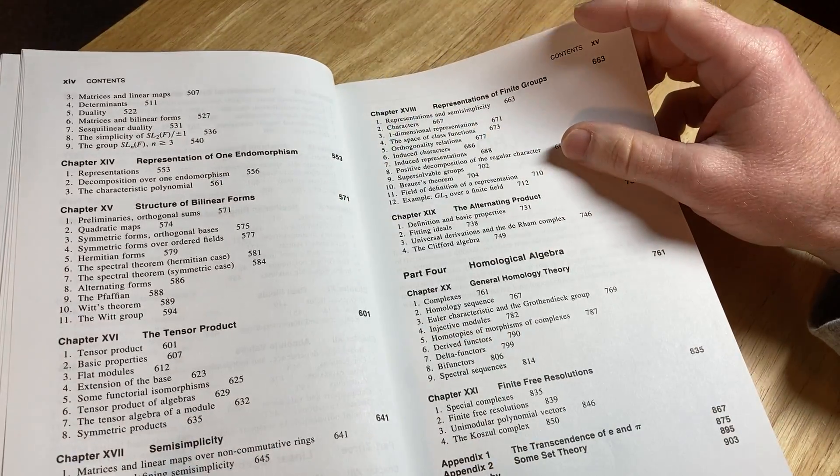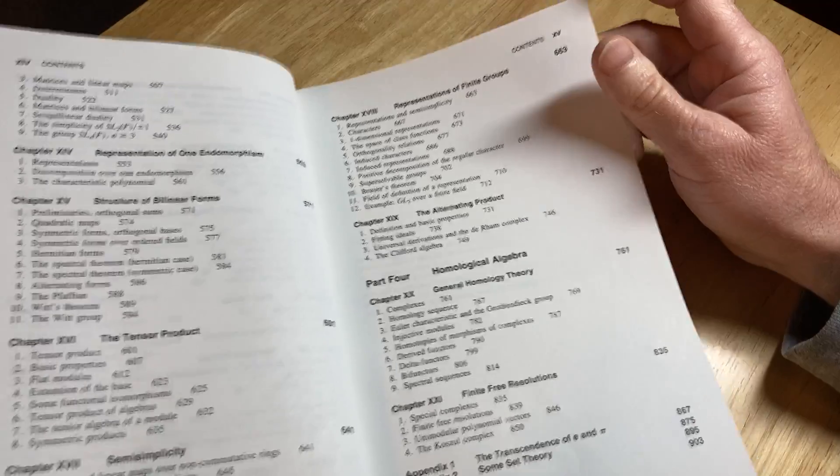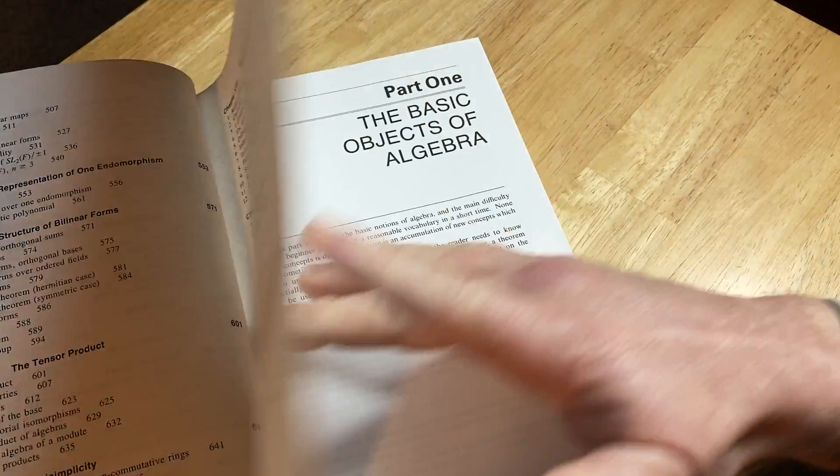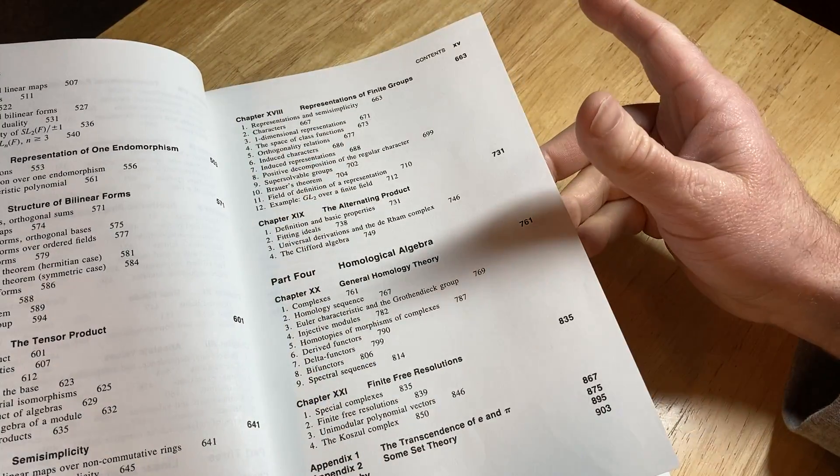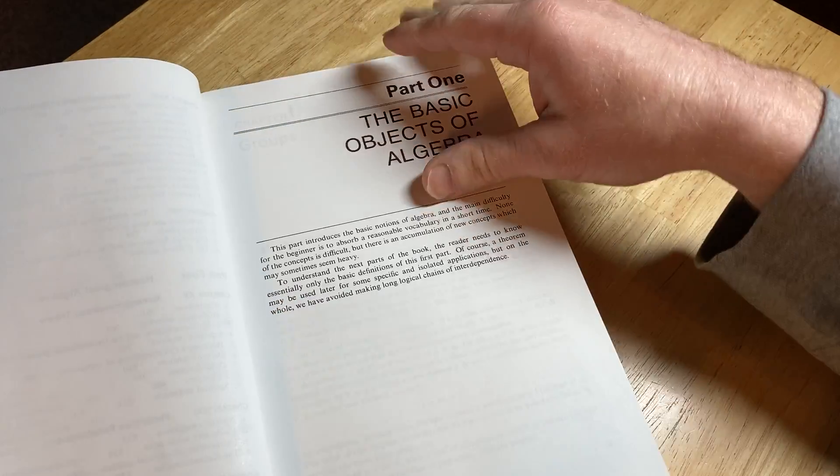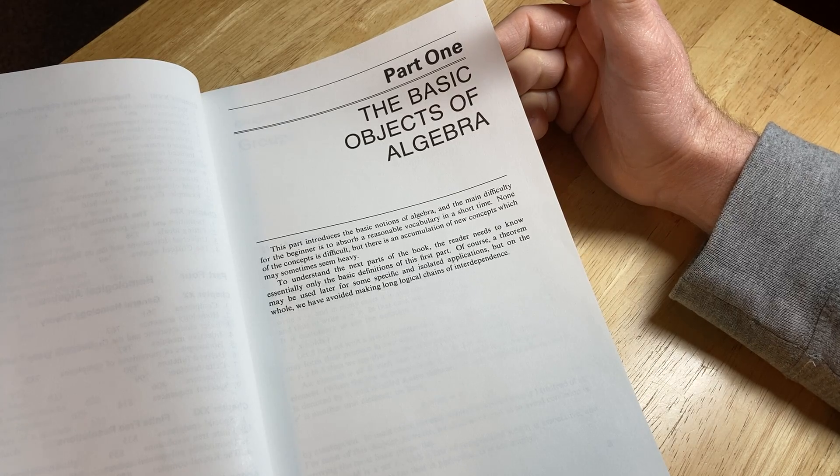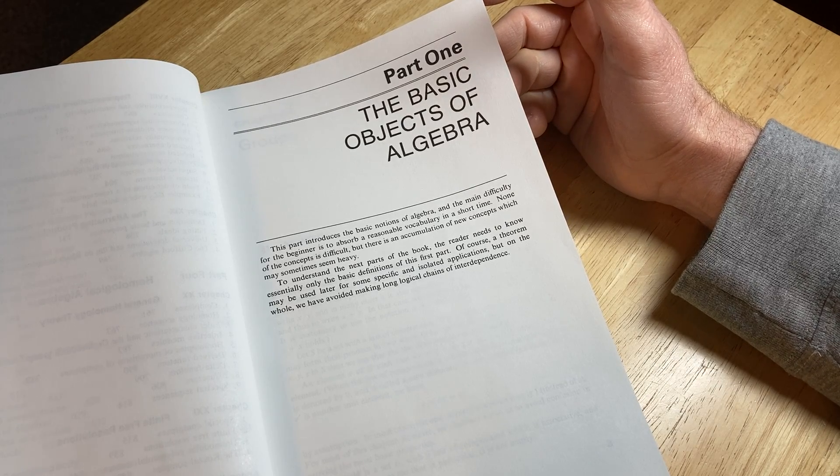Look at the tensor product, semi-simplicity. So all kinds of stuff that you might not see in other books. And the exercises are ridiculous. There's some really hard exercises in this book. I will show you some of the exercises.